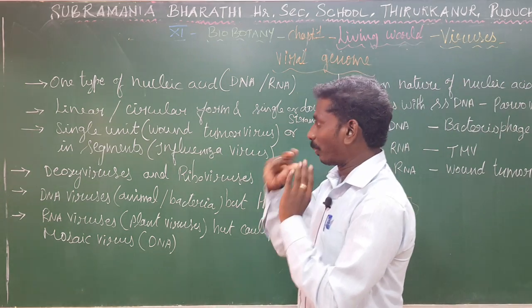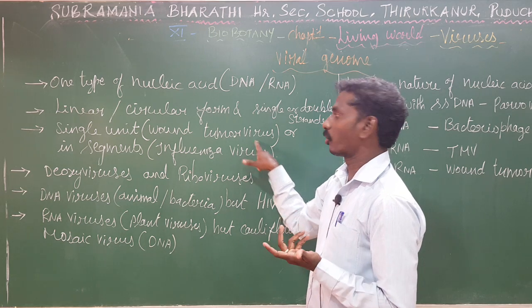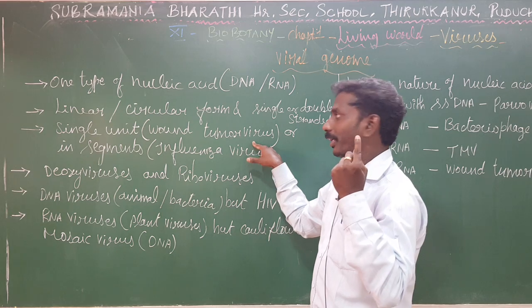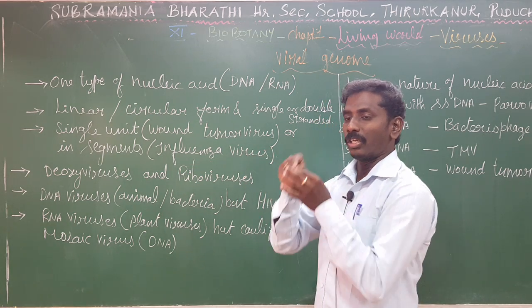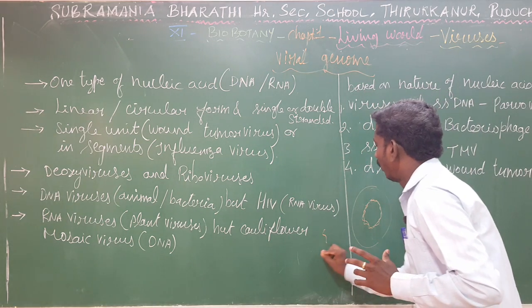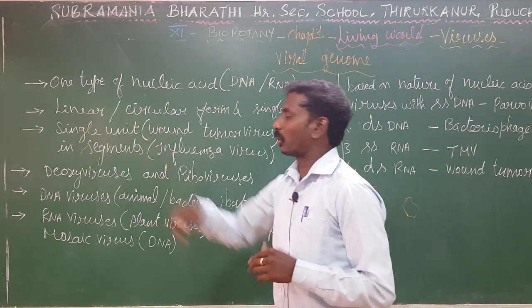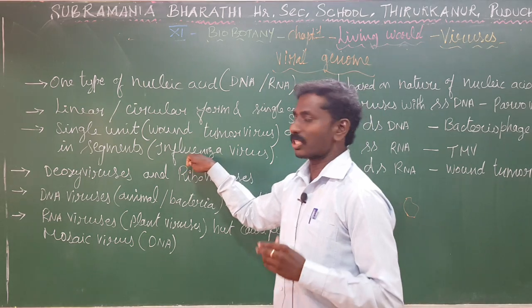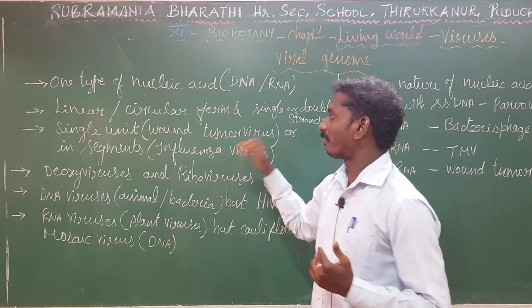An example of a single unit nucleic acid is the tumor virus — tumor is cancer. The nucleic acid of the tumor virus is one unit. Nucleic acid can also be segmented into two or three pieces. An example of segmented nucleic acid is the influenza virus.